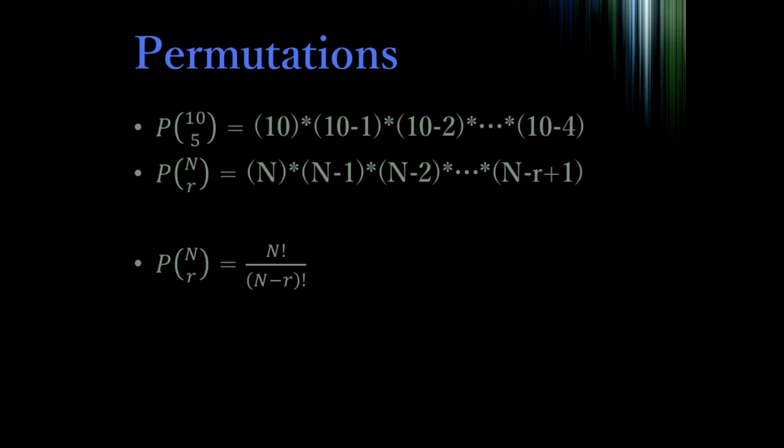We can write this more mathematically by saying the permutations when we have n objects that we want to distribute to r individuals is n factorial divided by n minus r factorial. Note that the 5 factorial cancelled out part of the 10 factorial in the above example.